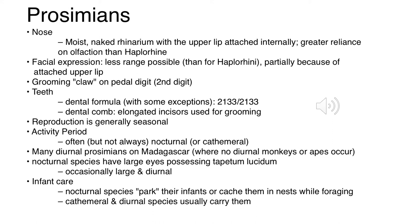Let's look at some general facts about prosimians. The rhinarium - that nose - is hugely important for determining if an animal is a Strepsirrhine or Haplorhine. Our Strepsirrhines, our prosimians, have that moist naked rhinarium with an attached upper lip, which makes it less mobile. They also have a greater reliance on olfaction - sense of smell - a trend that changes as we move through the primate order.